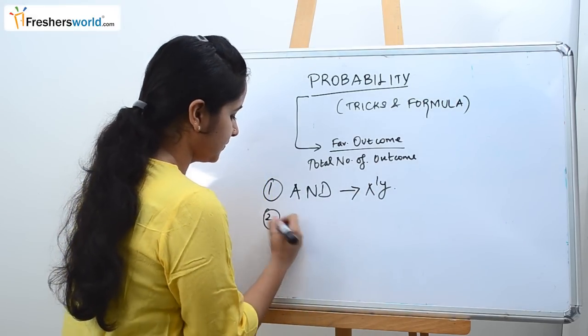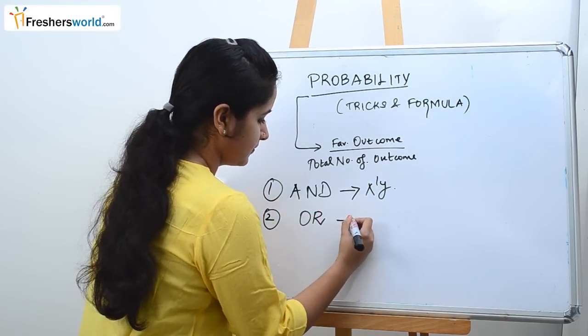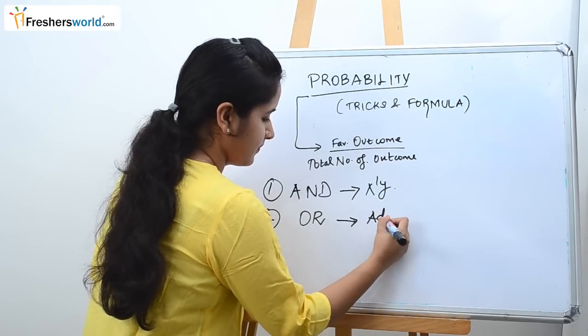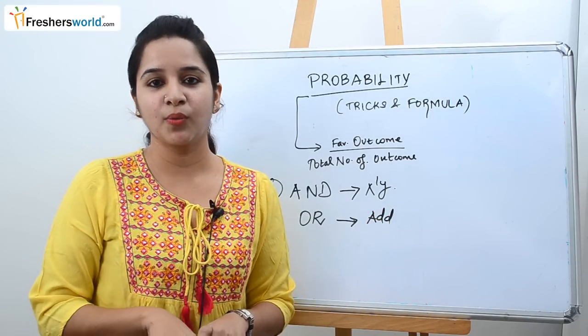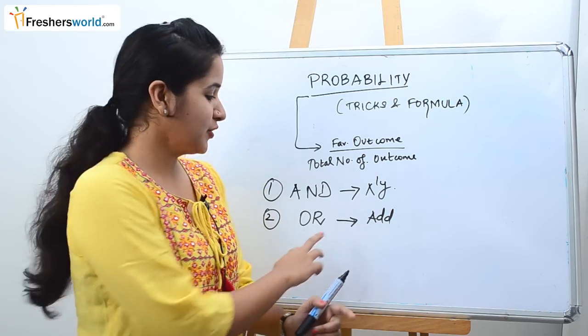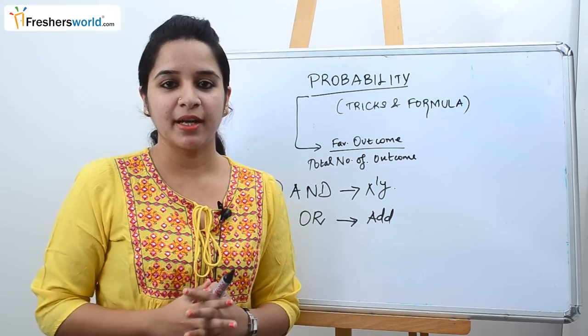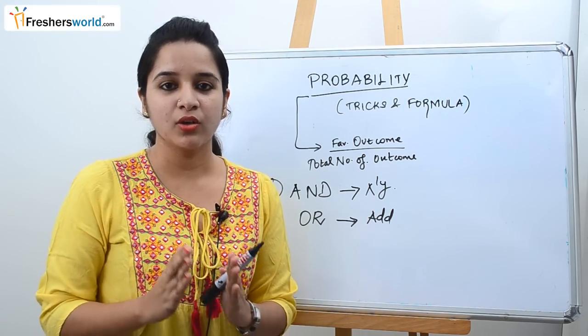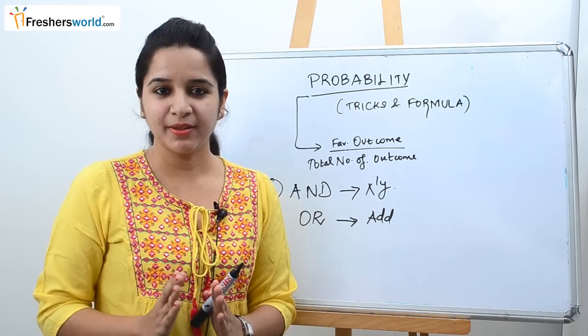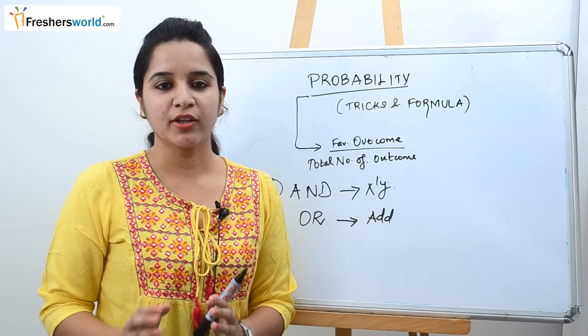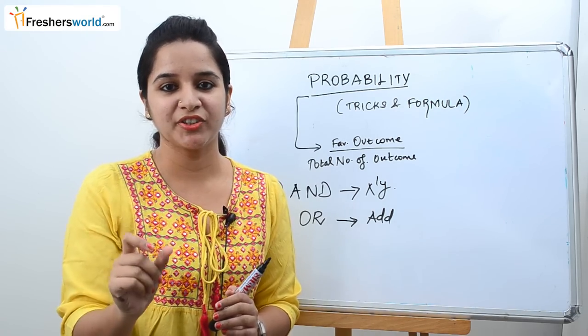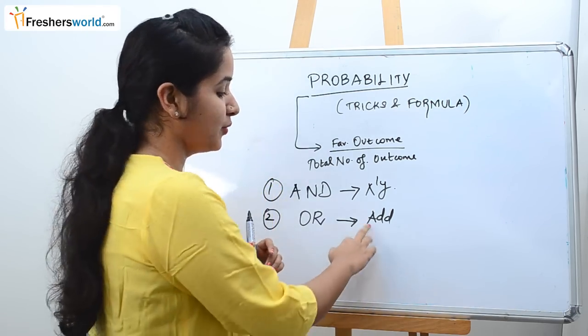Trick two: Similarly, if the question has 'or' in it then you have to definitely add it. For example, one king or one queen, one red ball or two blue balls. If you find the word 'or' in the question immediately you have to add it.